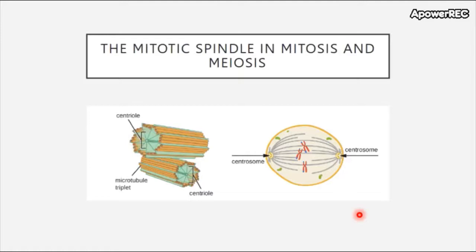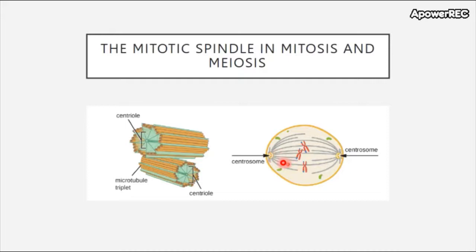The mitotic spindle also uses microtubules. When the cell is separating its chromosomes — represented as X's — to different ends of the cell before cytokinesis, it forms centrosomes at the polar ends of the cell. These centrosomes attach themselves to the chromosomes in order to pull them to either end. You can see here how the microtubules play an essential role in transporting and separating the chromosomes.